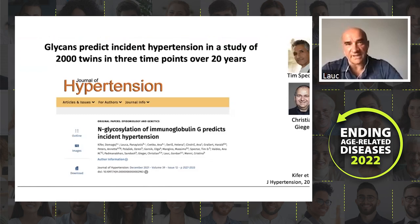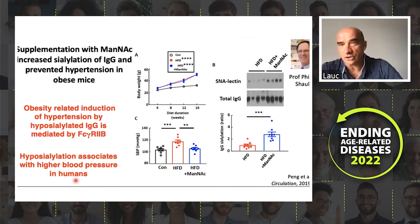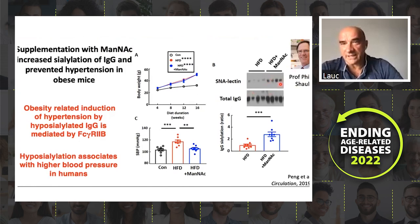Together with Phil Scholl from UT Southwestern, we showed in an animal model that if you correct the glycans, you can actually prevent hypertension. He fed mice a high-fat diet — the mice became obese, developed hypertension, and lost sialylation of IgG, meaning their IgG became older. But when he fed the mice with ManNAc, which is N-acetylmannosamine, the precursor of sialic acid, IgG sialylation was restored. The mice did become obese, but they did not develop hypertension.